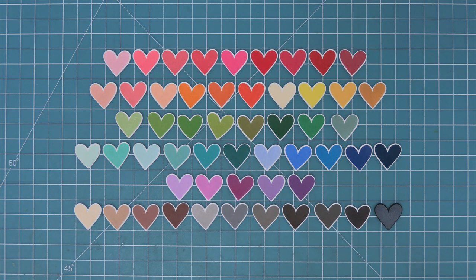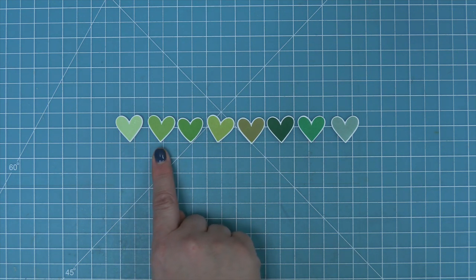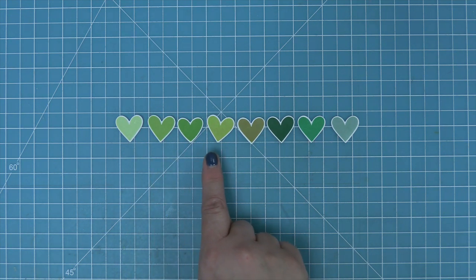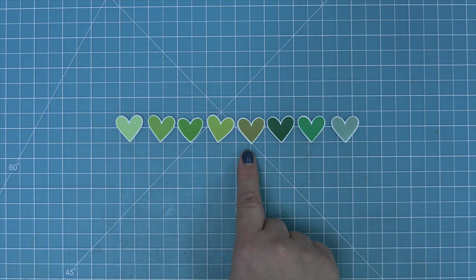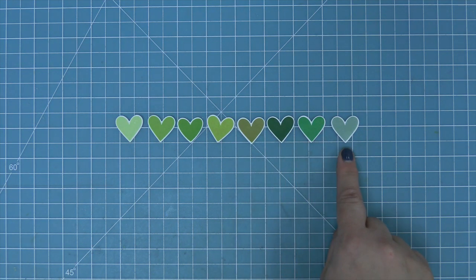Now let's take a closer look at that row of greens. So first up we have Celery Stick, then Freshly Cut Grass, Jalapeno, Cilantro, Artichoke, Noble Fir, the brand new Clover, and Sage Leaf.